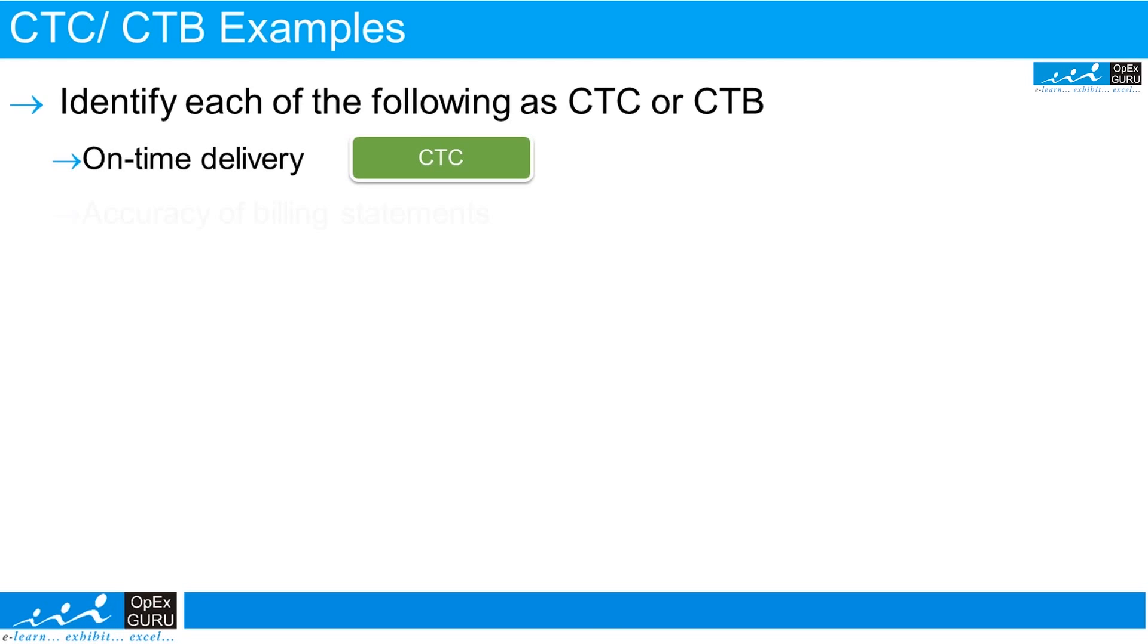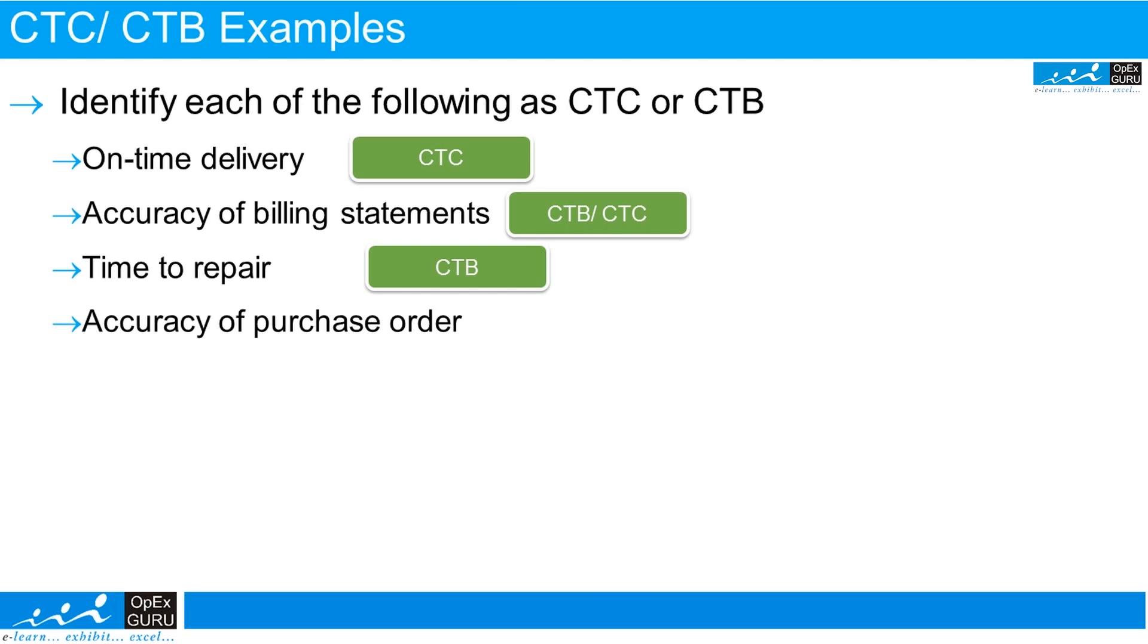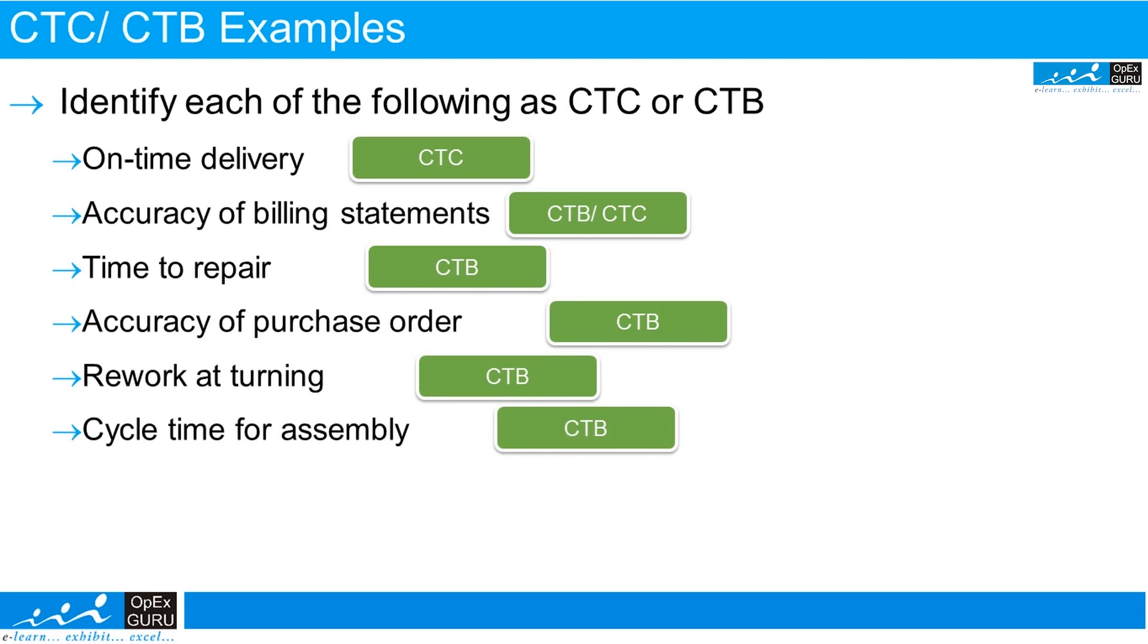Accuracy of billing statement is both CTB and CTC, because if your bills are not accurate, the customer is affected and your business is affected. Time to repair is CTB, critical to business. If equipment in your organization is not working and the repair time is more, your business is affected. Accuracy of purchase order, critical to business. Rework at turning, critical to business. Cycle time for assembly, critical to business. Boiler efficiency, critical to business.